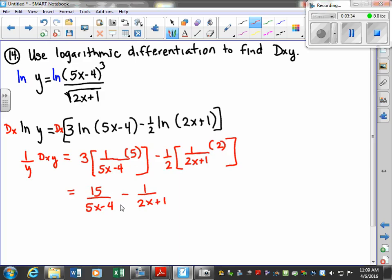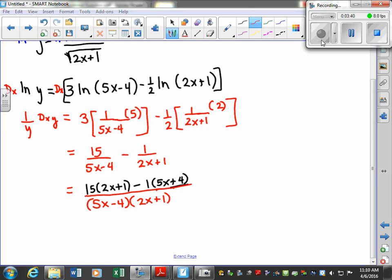Now here we can go off to the side and simplify this algebraically. Actually, we'll just do it right underneath it. So multiply these two together. That means you'll have 15 times the 2x plus 1 minus 1 times the 5x plus 4. And then when you simplify this.